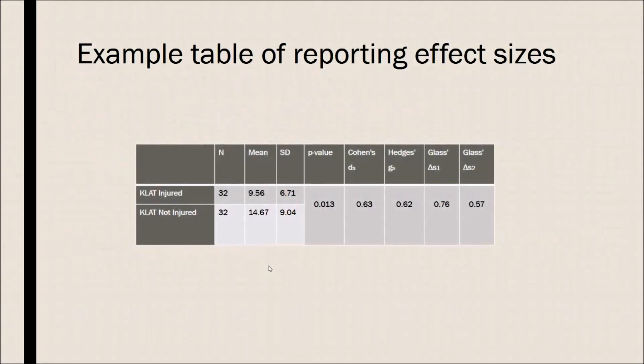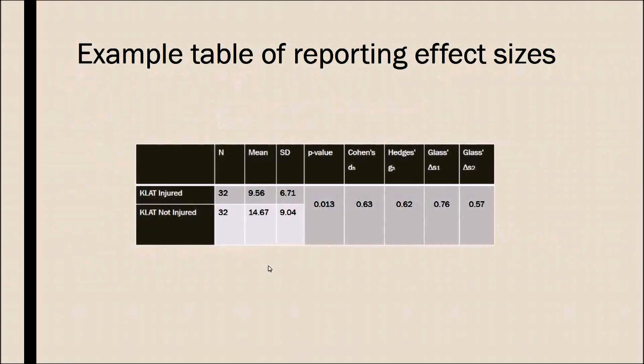An example table of reporting effect sizes could be as followed, and this is mainly for the difference of the between groups. I didn't do one for the within groups, but it's pretty much the same idea. N is 32 for both, the means and standard deviations, the p-value, which is significant in this case, and then you can list the different effect size indices that you used, and you can discuss them.